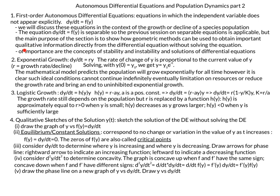Our first example of that was exponential growth, where dy/dt is equal to r, a constant, times y. The idea is that growth of a population, or the rate of change of y, is proportional to the current value of y. R is called the growth rate or growth decline. When we solve this equation — it is a first-order linear equation — we get y equals y-naught times e to the rt.